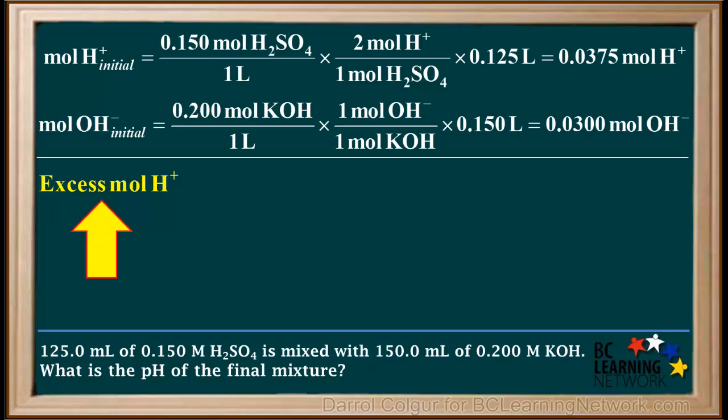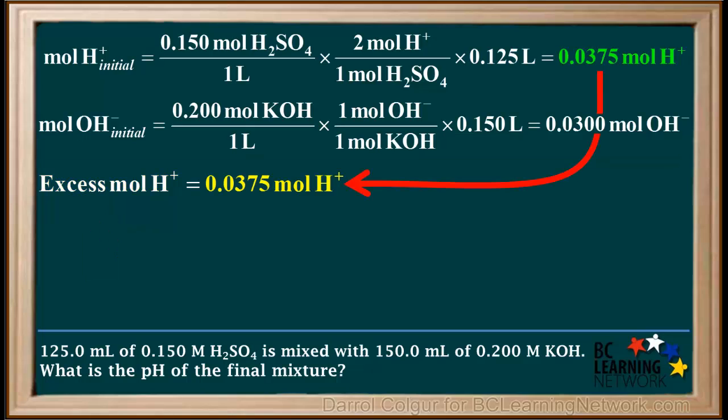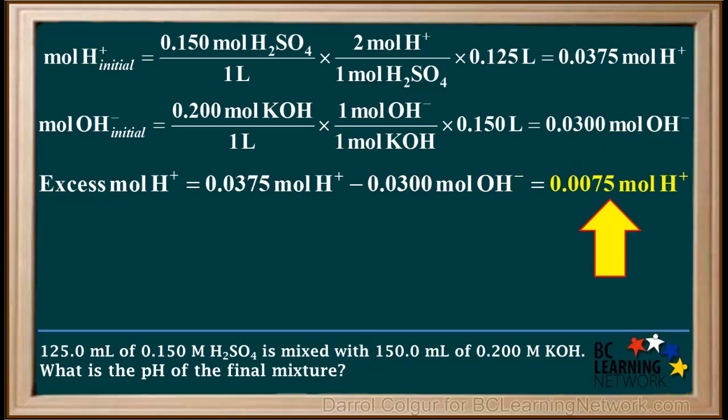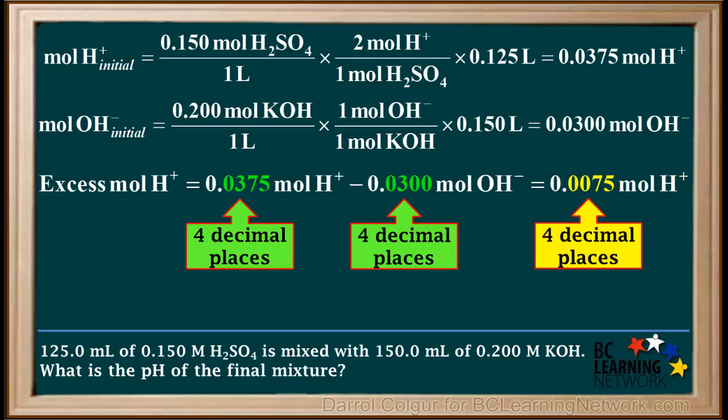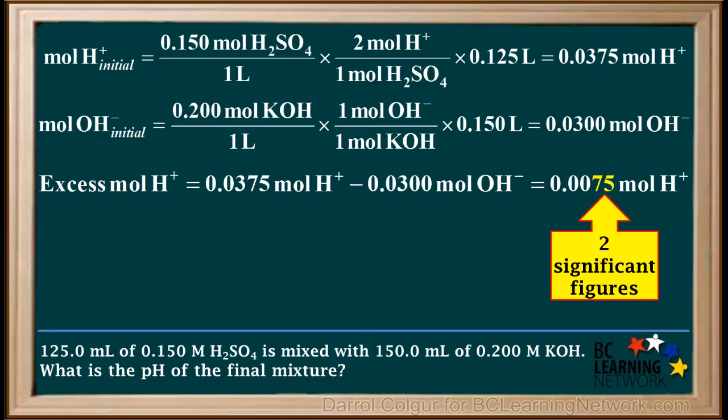We calculate the excess moles of H plus by taking 0.0375 moles of H plus and subtracting 0.0300 moles of OH minus, to give us 0.0075 moles of H plus in excess. This answer, 0.0075, has four decimal places because the numbers we subtracted both had four decimal places. But we can see that written this way, this number has only two significant figures, the 7 and the 5. Therefore, the final answer to this problem cannot have more than two significant figures.